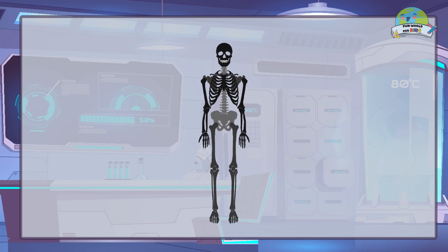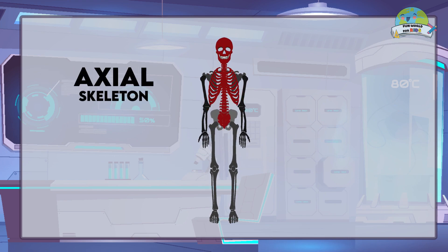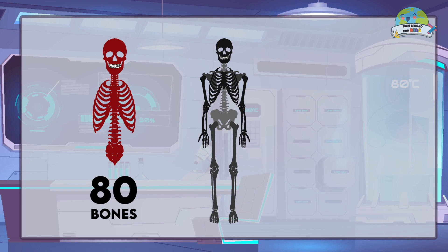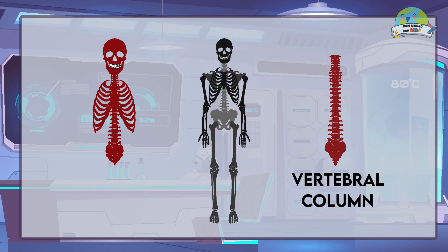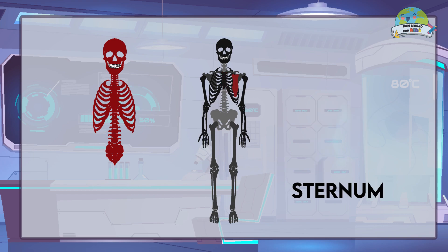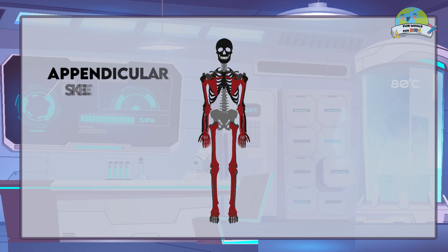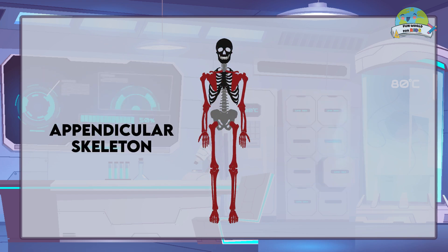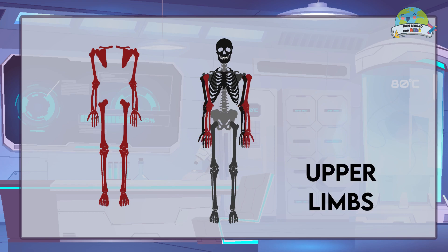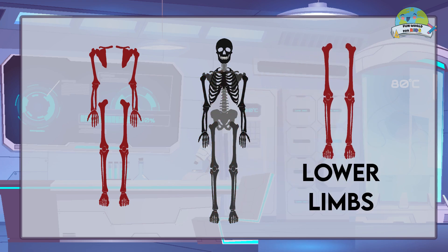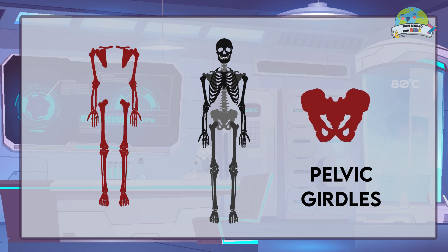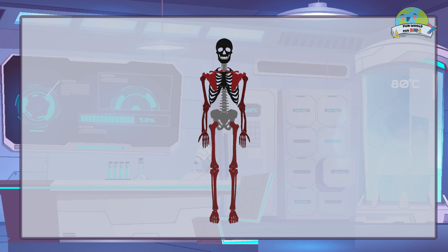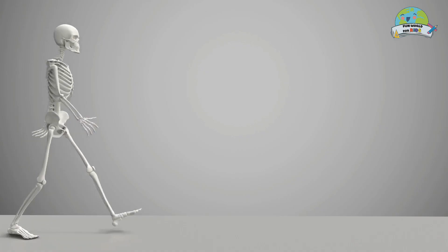The skeleton is divided into two parts. The axial skeleton has a total of 80 bones, such as the skull, vertebral column, ribs and sternum. The appendicular skeleton is formed by the bones of the upper and lower limbs, together with the shoulder and pelvic girdles. In total, it has 126 bones.